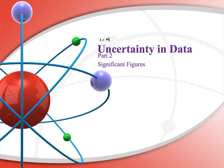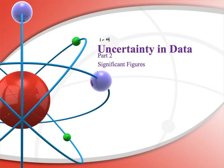Section 4 is on Uncertainty and Data, Part 2. We are going to cover significant figures. This is going to be a part of chemistry from now until you're done with it. Every time we're doing a calculation, we should always have significant figures in mind. You'll hear me call them sig figs, or if you see me write SF or SFs, that's standing for significant figures. This is going to be a very important lesson for the rest of your time in chemistry.